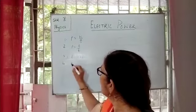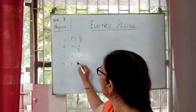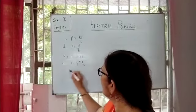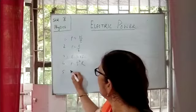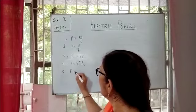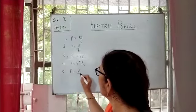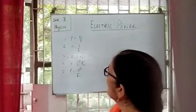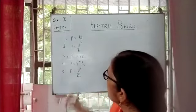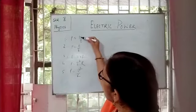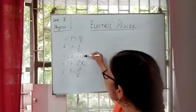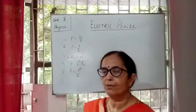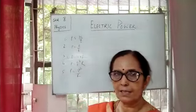Power is also equal to I squared R, and power is equal to V squared by R. So students, we have 5 relations to calculate power.